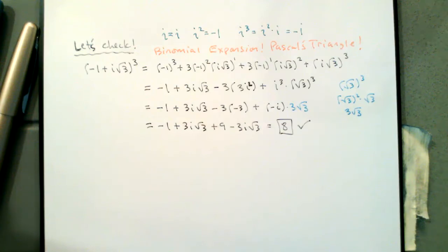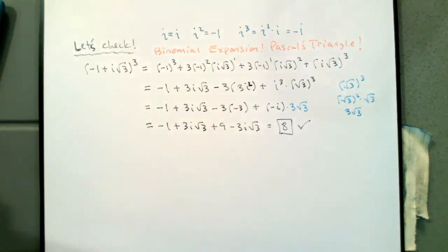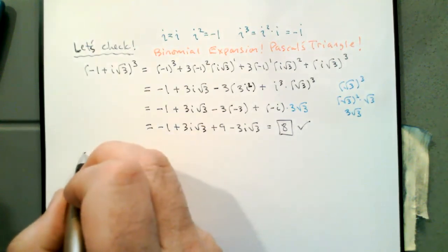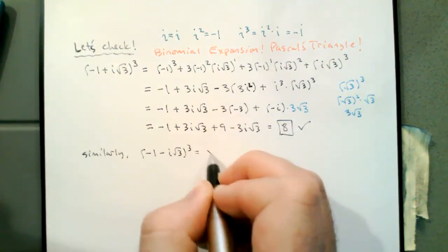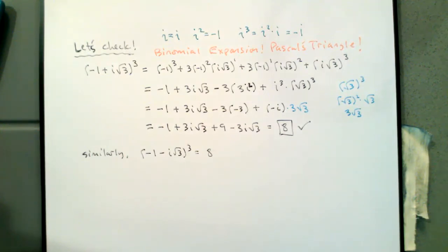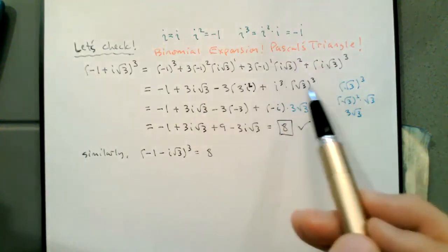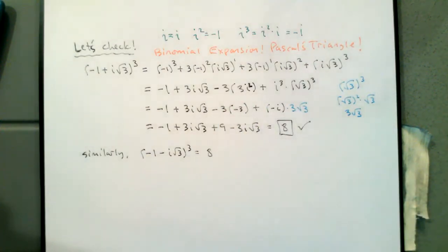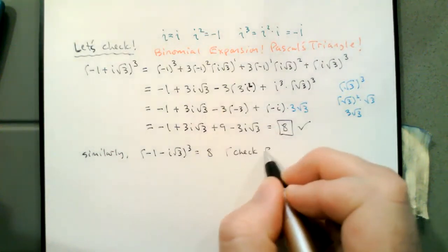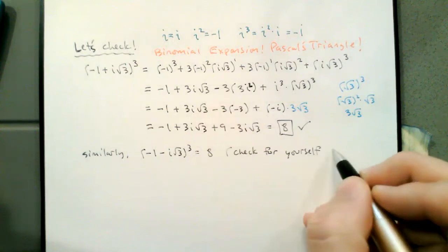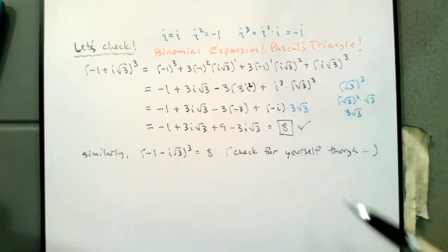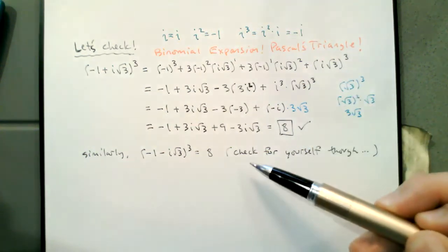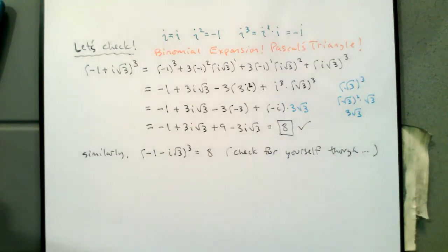We found that negative 1 plus i times root 3, cubed, gives us 8 — so that's one of the complex cube roots of 8. Similarly, negative 1 minus i times root 3, cubed, is also equal to 8 — the signs on the i root 3 terms flip around but we still end up with 8. You should check this for yourself, because it's only a couple of lines long. Most importantly, we've now found all three cube roots of 8.